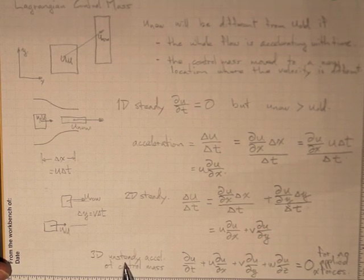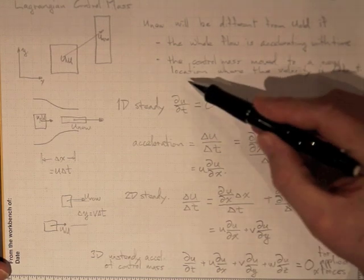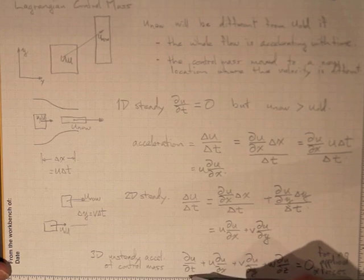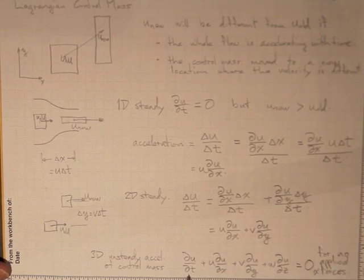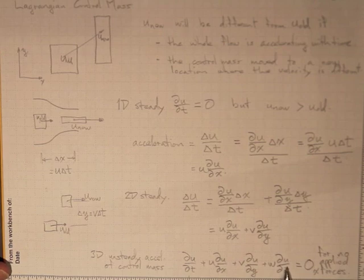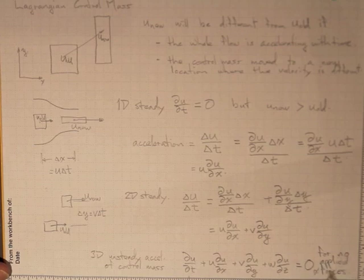Or for three dimensions and no longer worrying about whether it's steady or not, so this might be non-zero, the whole flow might be accelerating, we get that ∂u/∂t plus u ∂u/∂x plus v ∂u/∂y plus w ∂u/∂z is the acceleration of a particle of fluid sitting in the general solution domain and it must be equal to zero for no applied forces.